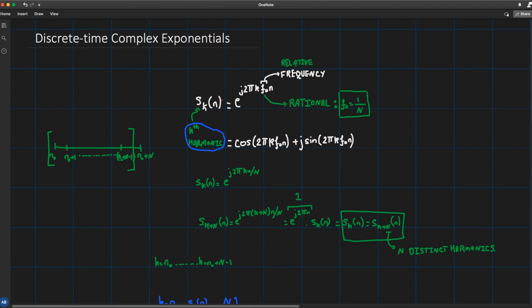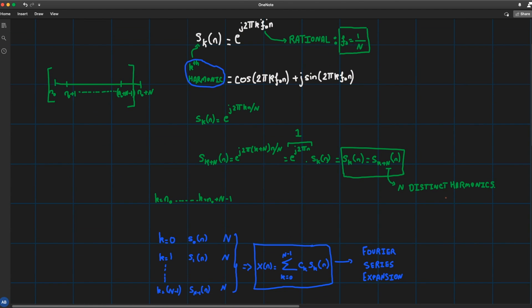And unlike the continuous time case we saw that the discrete time case has a finite number of harmonics. So it's all dependent on the denominator of your rational frequency. So if my rational frequency is written as 1 over N then I only have N distinct harmonics s₀ down to s_{N-1}.